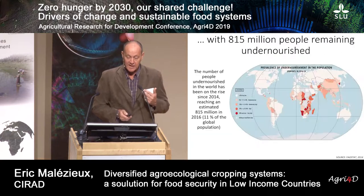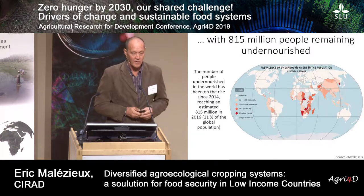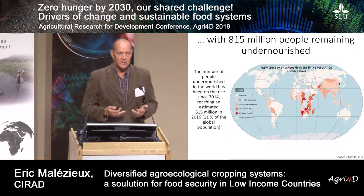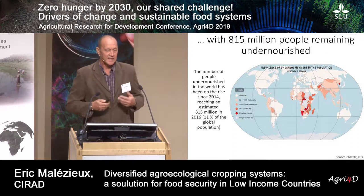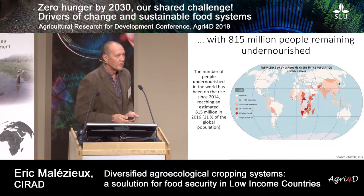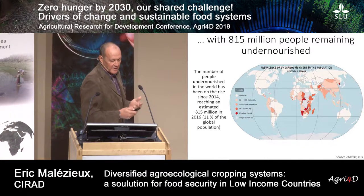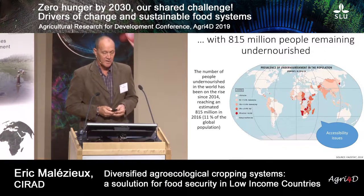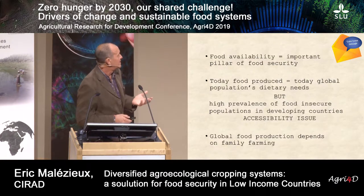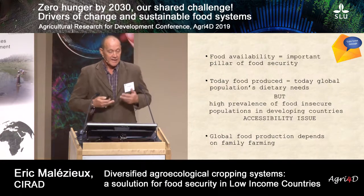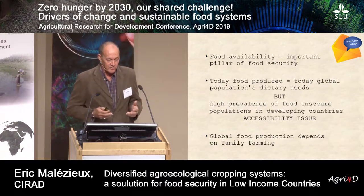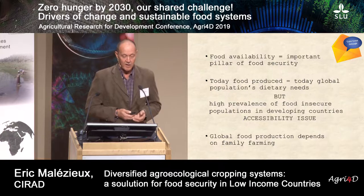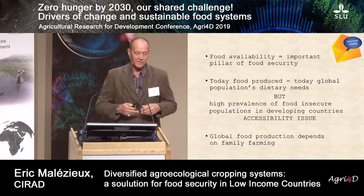There is a high dependency on imports for these red countries. As you can see on this other map, more than 800 million people remain undernourished — this has been on the rise, and it's more than 10% of the global population. It is mainly Africa and some parts of Asia. So there are also accessibility issues. Food availability is still an important pillar of food security, but there is a high prevalence of food insecure populations in developing countries, mainly in Africa.